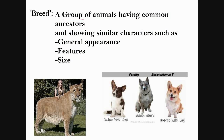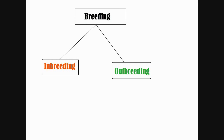A breed is termed as a group of animals having a common ancestor and showing similar characters like general appearance, features, size, and configuration. There are basically two types of breeding: inbreeding and outbreeding.